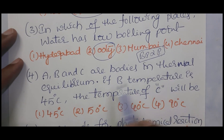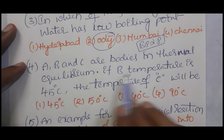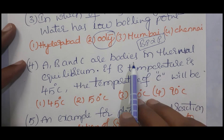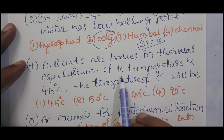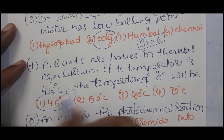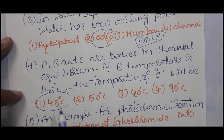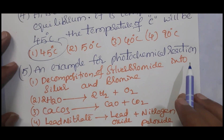A, B, C are bodies in thermal equilibrium. If B's temperature is 45°C, what is the temperature of C? Thermal equilibrium means bodies have the same temperature. So if B's temperature is 45°C, the remaining bodies also have the same temperature. Therefore, C's temperature is also 45 degrees Celsius.